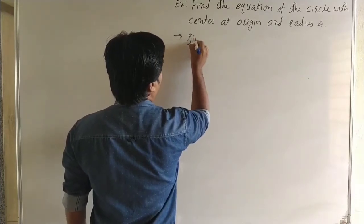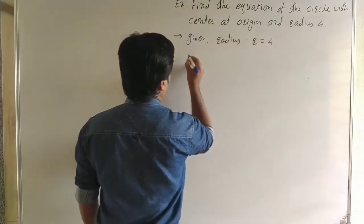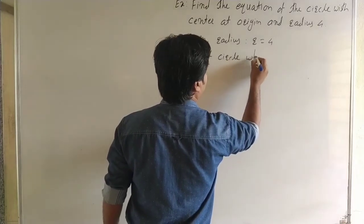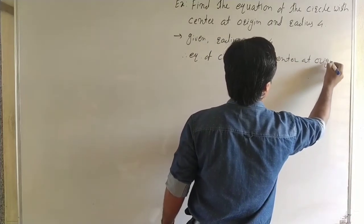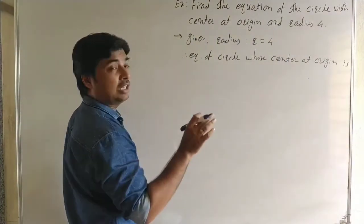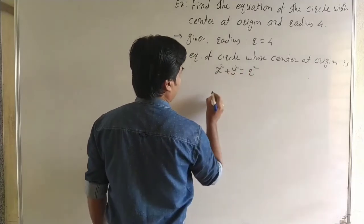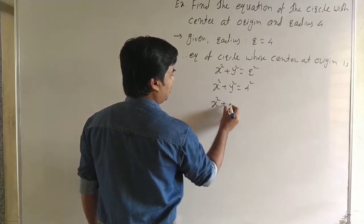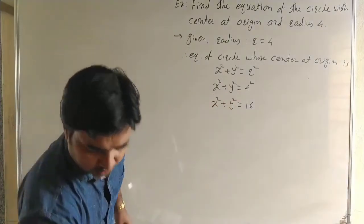Given that radius r = 4. Therefore the equation of circle with center at origin is x² + y² = r². Substituting, it is x² + y² = 4² = 16. So the equation of the circle is x² + y² = 16. Now we see the next example.